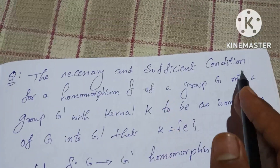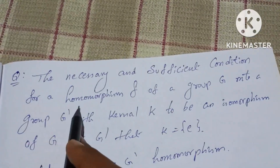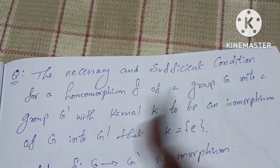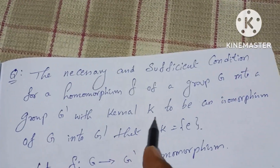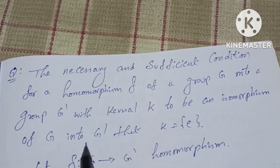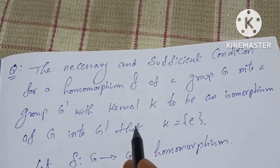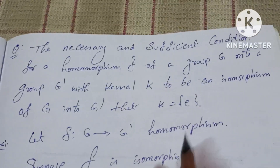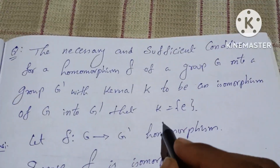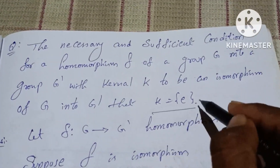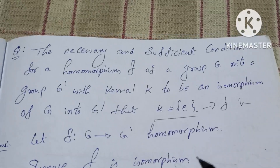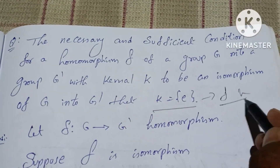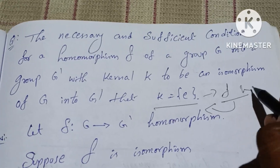The necessary and sufficient condition for a homomorphism F of a group G onto a group G' with kernel K to be an isomorphism of G into G' is that K is equal to E. This is a very easy result. The condition K equal to E is equivalent to F being one-to-one.